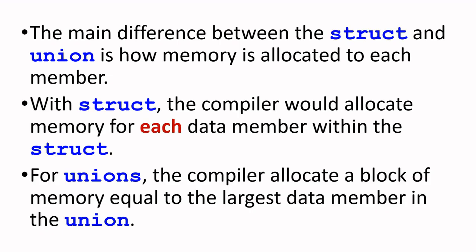The main difference between struct and union is how memory is allocated to each member. With struct, the compiler would allocate memory for each data member within the struct. But for union, the compiler will allocate a block of memory equal to the largest data member in the union.